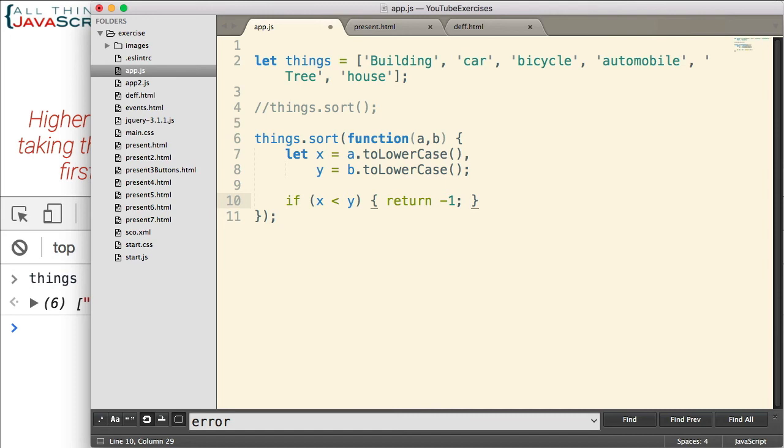Remember, a negative number will indicate that the first argument should come before the second argument. We'll do another if statement. If y is less than x, we'll return a positive number. And finally, if none of those are the case, we'll return a zero, meaning they are equal to one another.